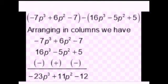In this example, minus 7p³ plus 6p² minus 7, and 16p³ minus 5p² plus 5. We arrange in column method. Then, this is the sum of subtraction, so we change the sign. Plus 16p³, we write minus 16. Minus 5p², we write plus. Plus 5, we write minus. First of all, we change the sign. Then we solve sum according to new sign.